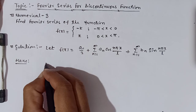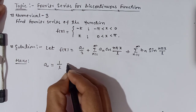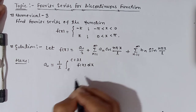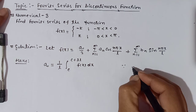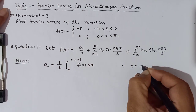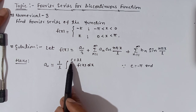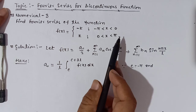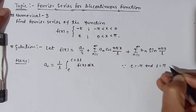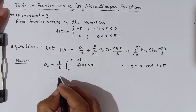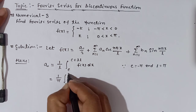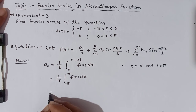The general formula of a₀ is equal to 1/l times the integration from c to c+2l of f(x) dx. Because the limit is -π, we convert it: with l = π, the formula becomes 1/π times the integration from -π to π of f(x) dx.